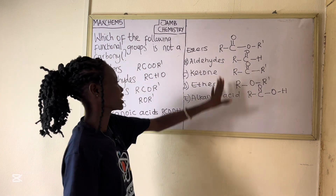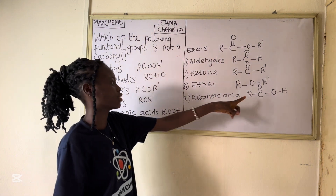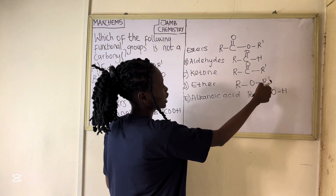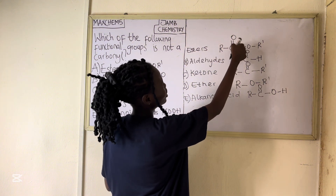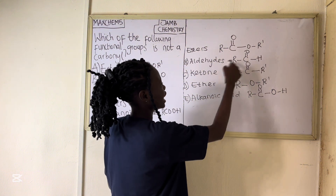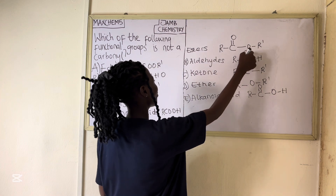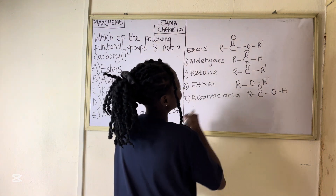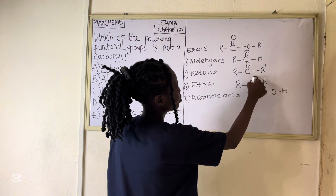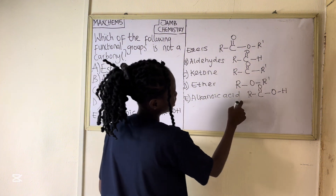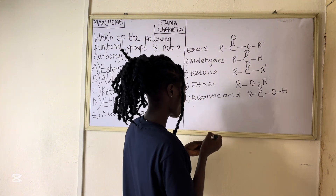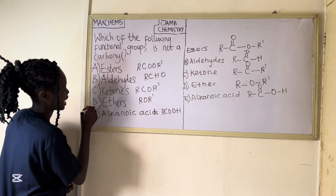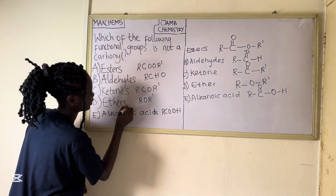So amongst all these options, as you can see, it is only the ether that does not have the carbonyl group, because it does not have C double bonded to O. In esters we have C double bonded to O; in aldehyde we have C double bonded to O; in ketone we have C double bonded to O; ether does not have any C double bonded to O; and in alkanoic acid we have C double bonded to O. So ether is the correct answer.